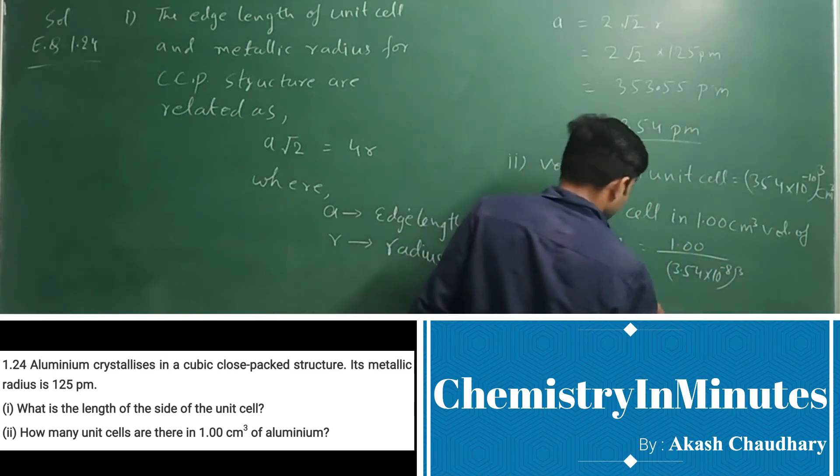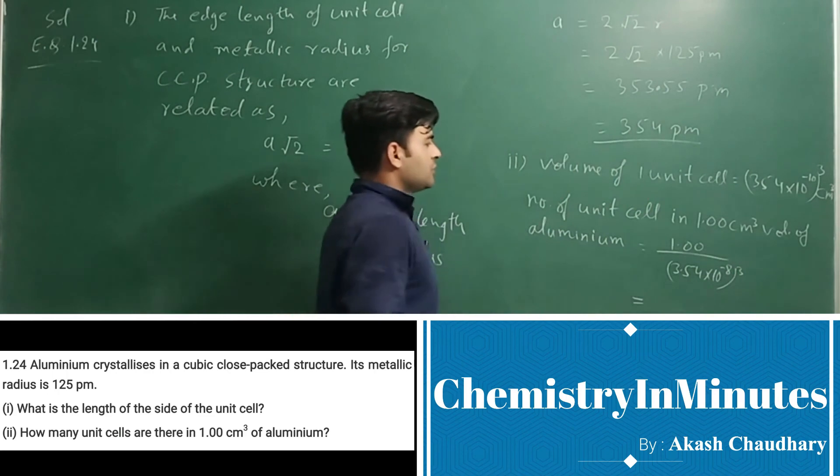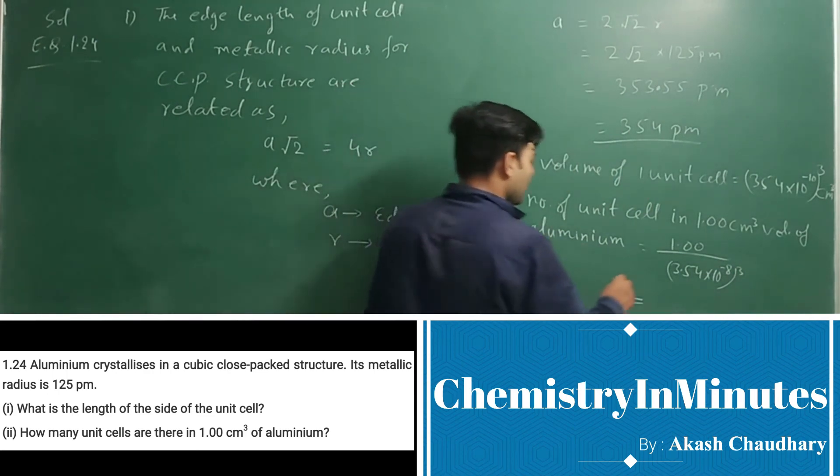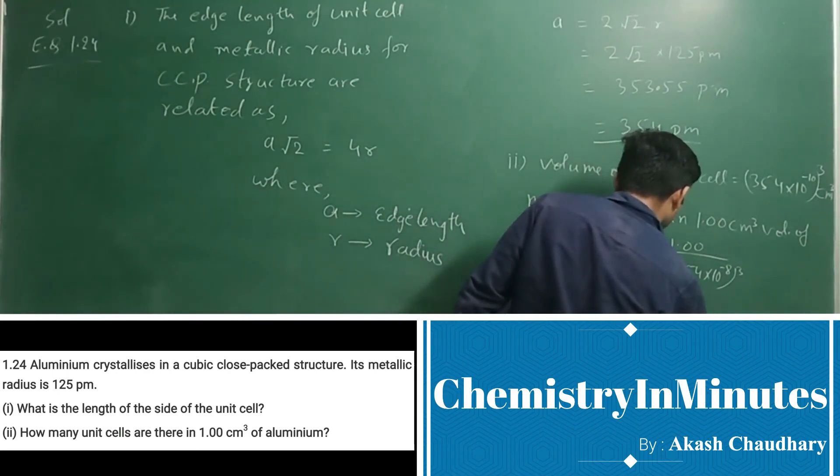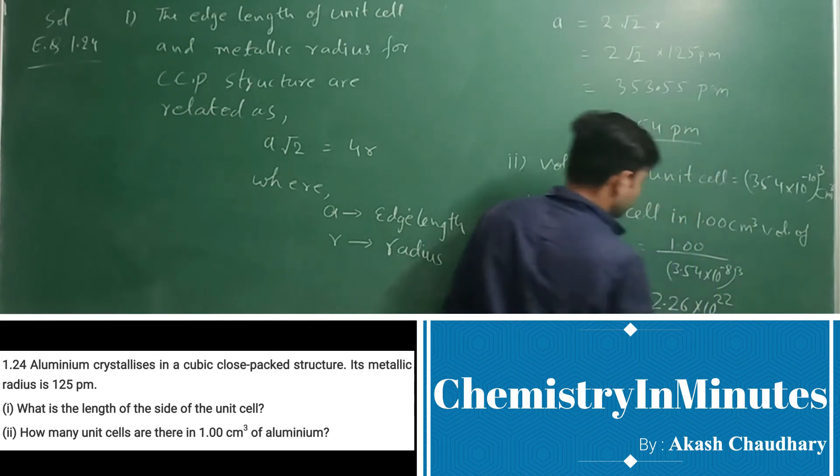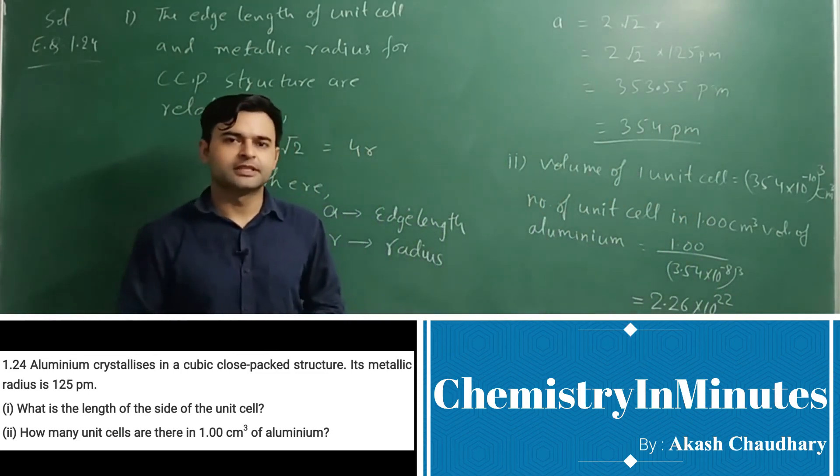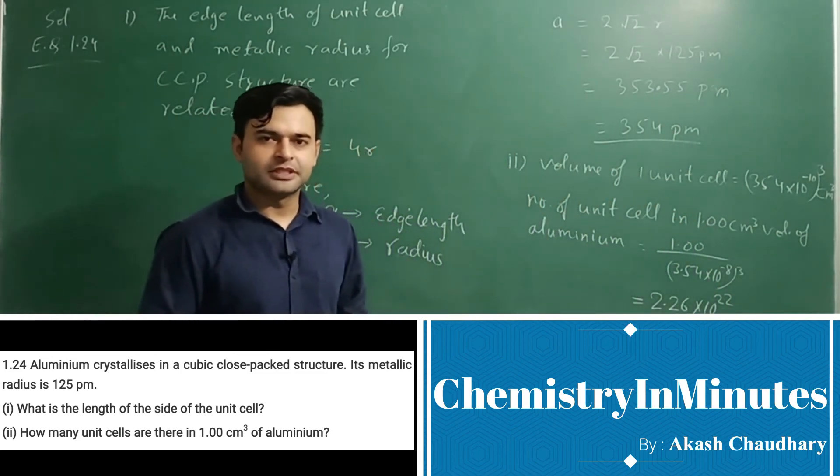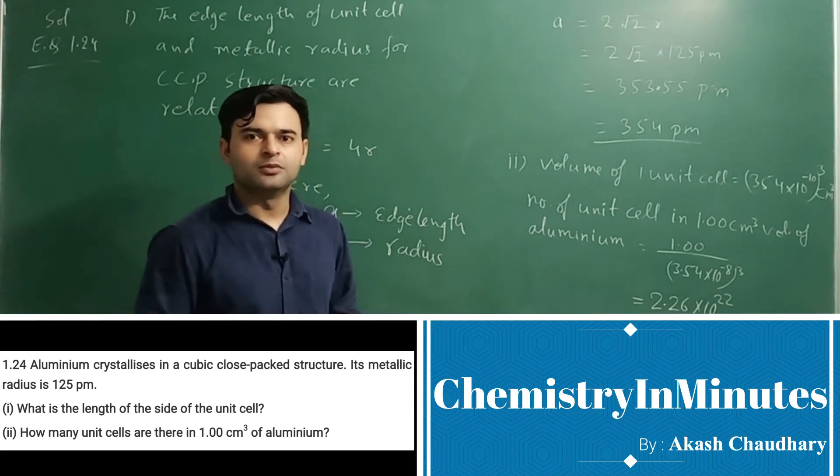On solving this, the answer will be coming as 2.26 × 10^22. So this will be the number of unit cells in 1.00 centimeter cube volume of aluminum.